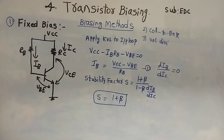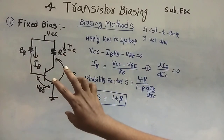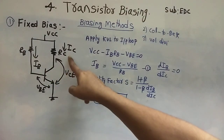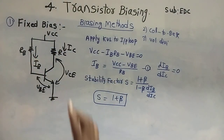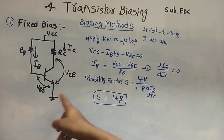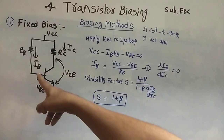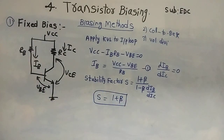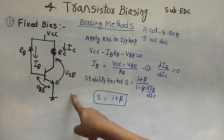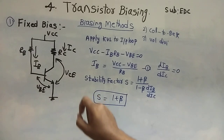For each biasing method we have to find the stability factor. This is the circuit for the fixed bias circuit. Here we have RC and RB, both connecting to VCC, and the emitter is connecting to ground. The input voltage between the base and emitter is VBE, the current through RB is IB, the current through RC is IC, and the output voltage is VCE.